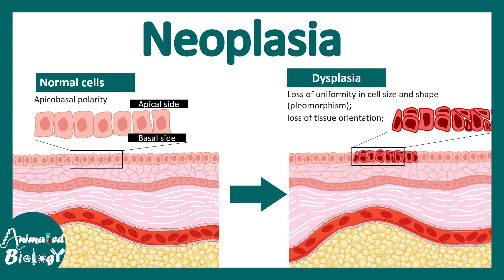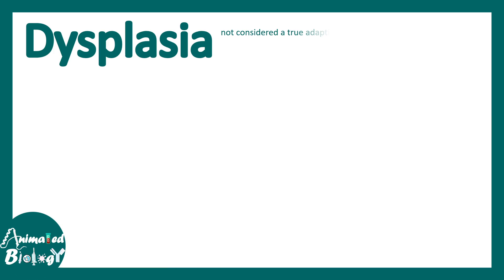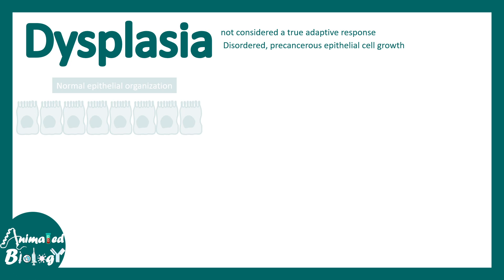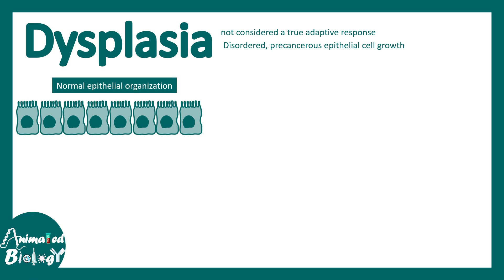This loss of uniformity of shape is known as pleomorphism. Overall, the orientation of the tissue is disrupted and nuclear shape has changed — these are all features of dysplasia. Dysplasia is not really an adaptive response; it is a disordered, precancerous stage.